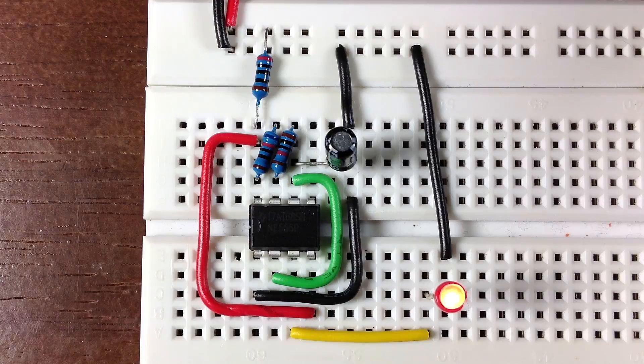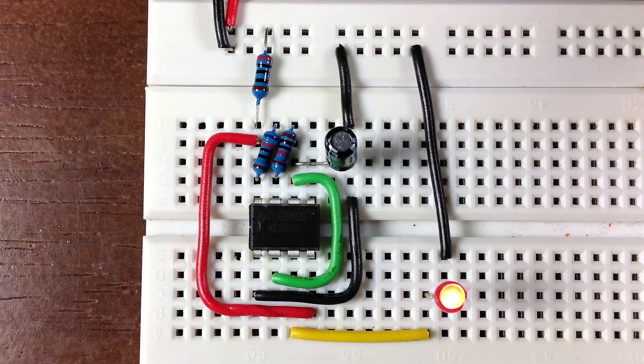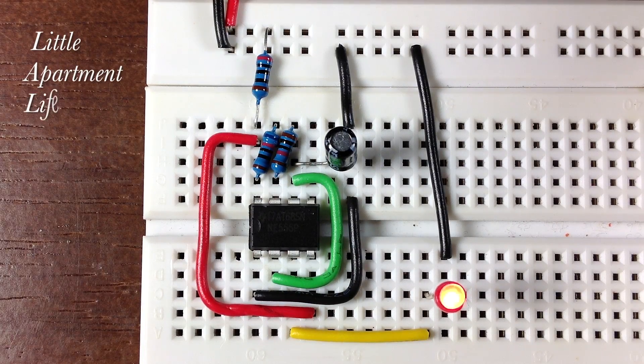Hi, I'm Noah and you're watching Little Apartment Life. This is a tutorial for how to make an oscillator from a 555 timer.